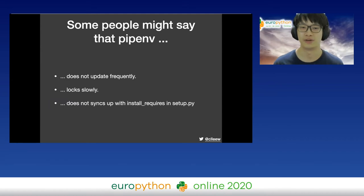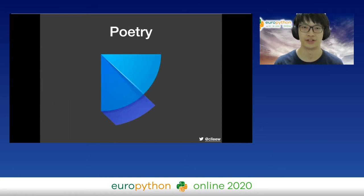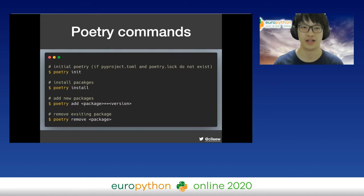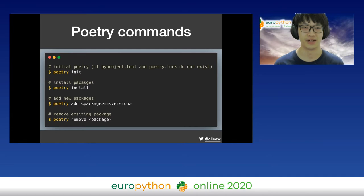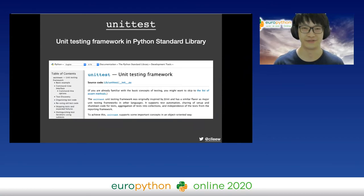Some people might say that pipenv does not update that frequently — although it was just updated two months ago — and that the lock file generation is really slow, and it does not sync out with install requests. Instead of pipenv, you could try Poetry. The concept of Poetry and pipenv are alike, so I'll list a comparison here as a reference. For releasing a package I recommend Poetry because you don't have to manually update dependencies on both Pipfile and setup.py — Poetry will do that for you. But for Python applications, both Poetry and pipenv work for me.